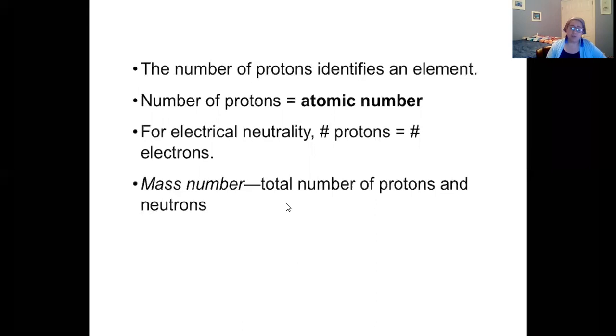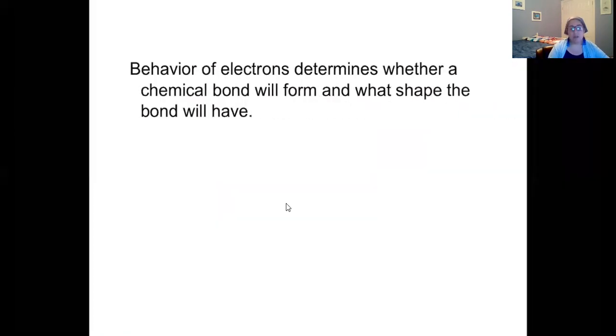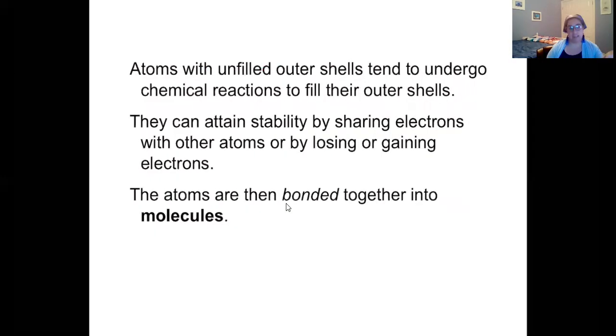When it comes to mass number, that is the total number of protons and neutrons that are found in the nucleus. Although we're not going to talk about that too much other than when we do carbon dating. We really don't focus on mass number in biology. The key thing about those subatomic particles, the protons, the electrons, the neutrons, is that it's the behavior of the electrons that determines whether a chemical bond will form and what shape that bond will have. So we focus mainly on the electrons, specifically on those outer electrons, which are called valence electrons.